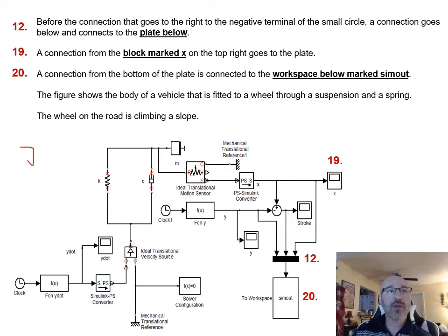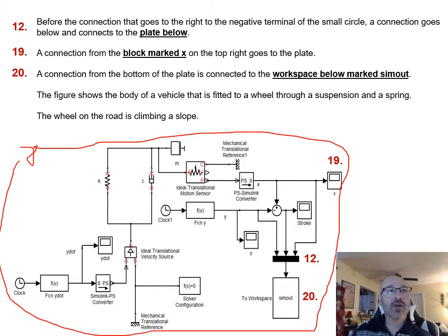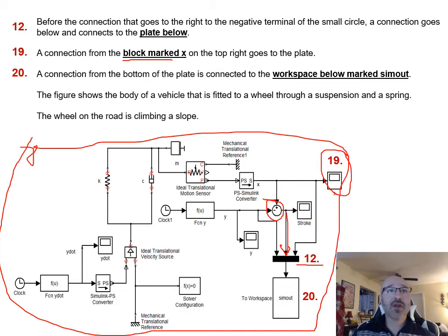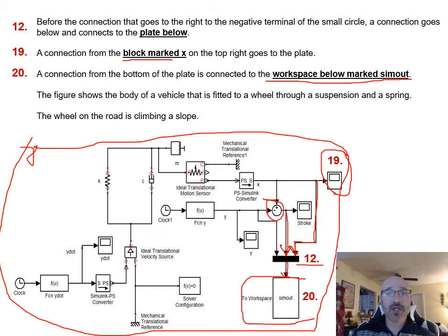Bringing the full diagram back together: element twelve is a horizontal plate that receives a connection dropping below the small circle before it reaches the negative terminal. Block X (element nineteen) also connects down to plate twelve. From plate twelve, a connection goes to the workspace block labeled sim-out, element twenty.